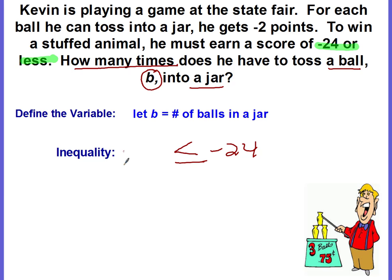And now we just need to figure out our expression that goes on the left side. So for each ball he gets negative two points. Each, for each, each means what operation? It means to multiply.